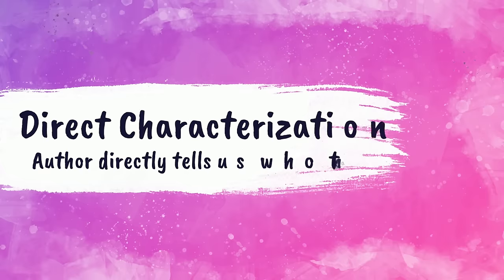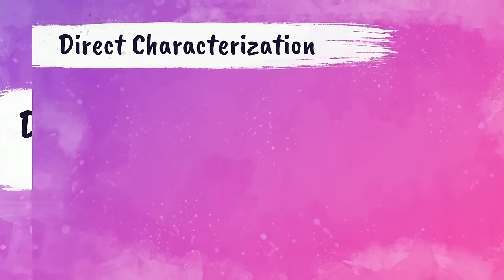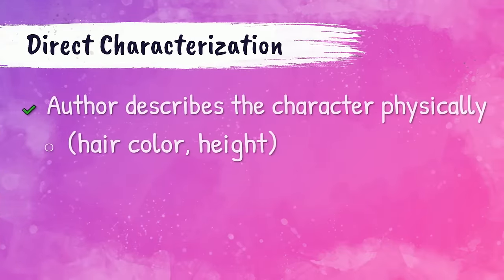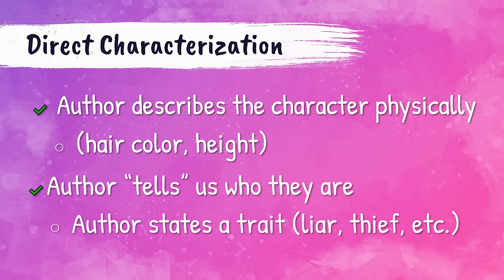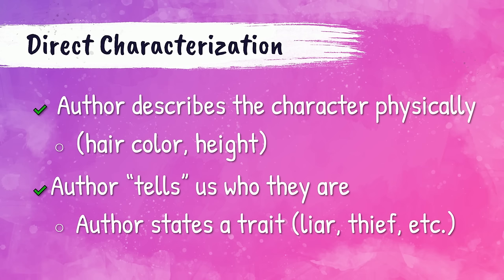Direct characterization is when the writer describes the character directly. The author describes the character physically — may give us hair color or height. The author may tell us who exactly they are by using character traits, like they're a liar or they're a thief, or maybe they're kindhearted.